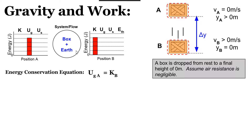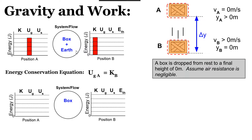Now let's consider what happens if the system is only the box — we take the earth out of the system. At position A, does the box alone have any stored energy in the gravitational potential energy account? The answer is no, because you need both the earth and the box collectively to store that energy. The box isn't moving and has no gravitational potential energy, so at position A the box system has no energy stored.